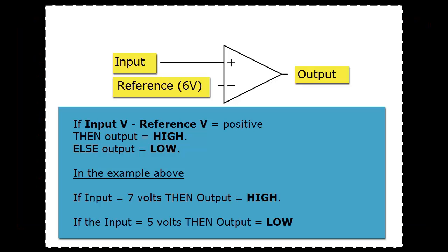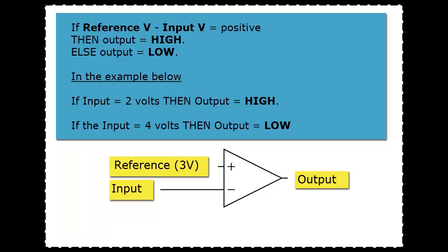Here's a simple comparator circuit. If input voltage minus the reference voltage is positive then the output is high otherwise it's low. And if we look at the other case, if the reference voltage minus the input voltage is positive then the output is high otherwise it's low. And we have some specific numbers in there to show you what the results should be.